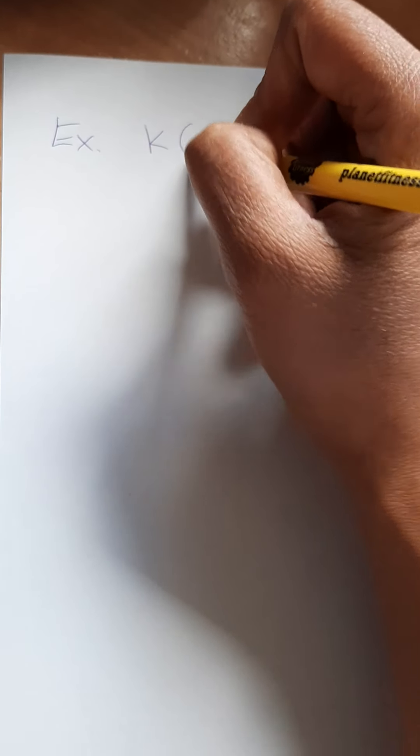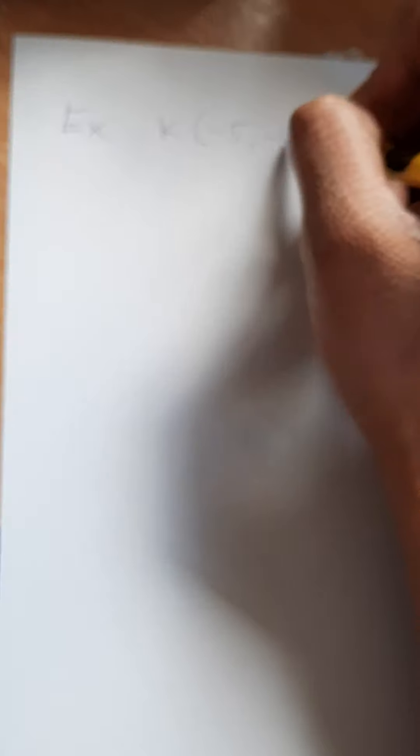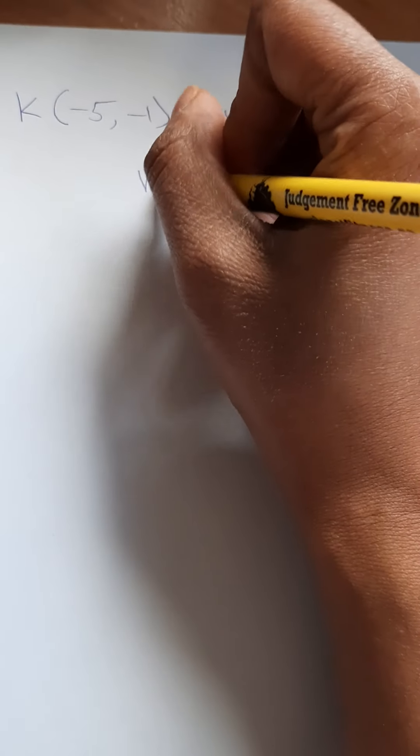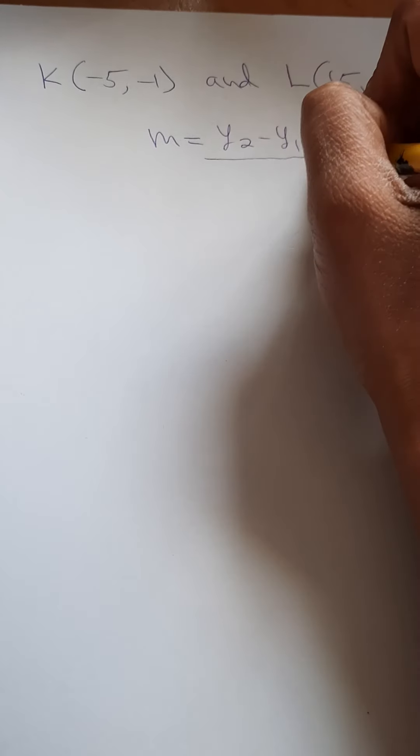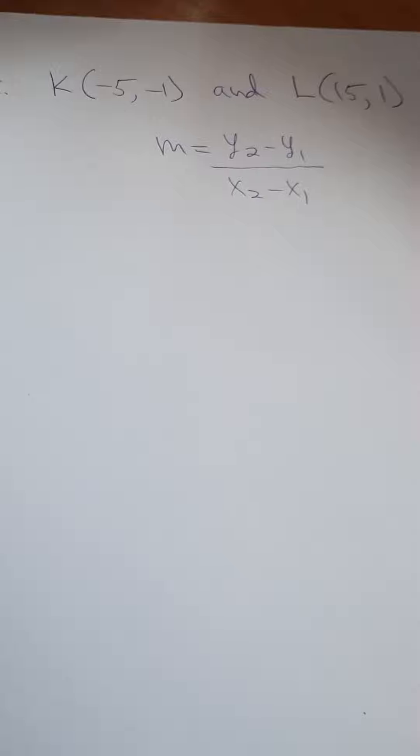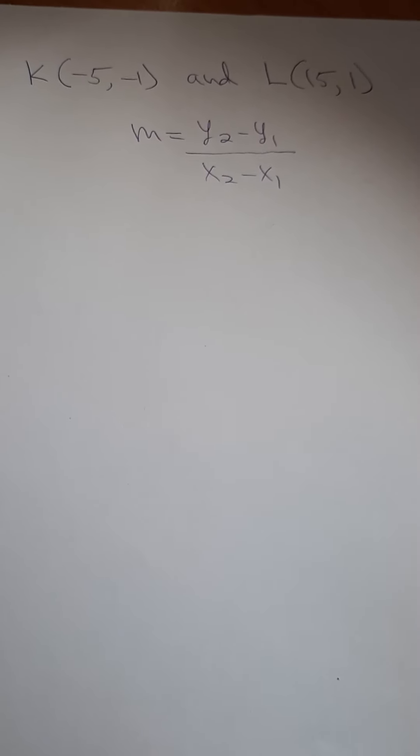Let's do point K, which is (-5, -1), and point L, which is (15, 1). I don't want the numerator or denominator to be 0, so we can actually calculate the equation of this line. Let's write the formula: y2 minus y1 over x2 minus x1. Make sure you're always writing the slope formula first before you plug it in.